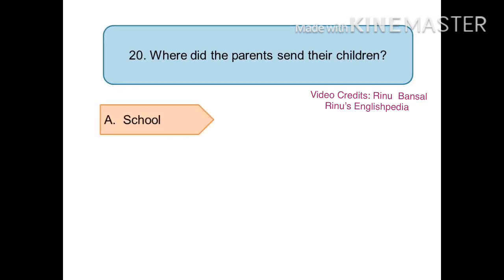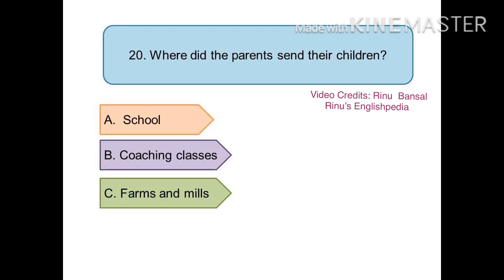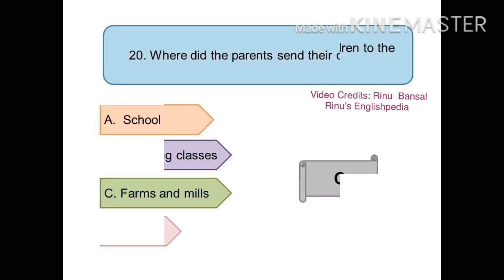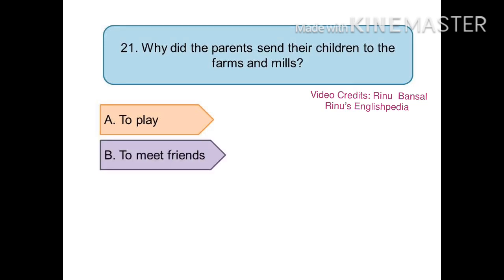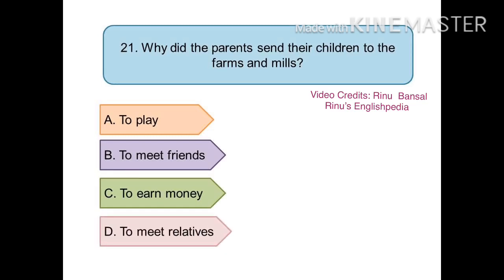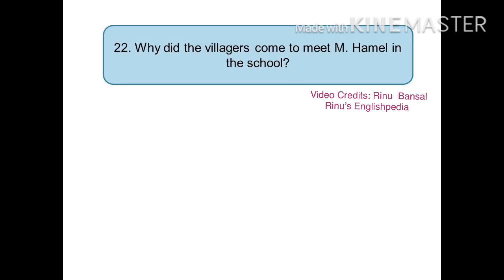The next question is: where did the parents send their children? The options are (a) school, (b) coaching classes, (c) farms and mills, or (d) movies. The right answer is (c) farms and mills. The 21st question is: why did the parents send their children to the farms and mills? The options are (a) to play, (b) to meet friends, (c) to earn money, or (d) to meet relatives. The right answer is (c) to earn money.